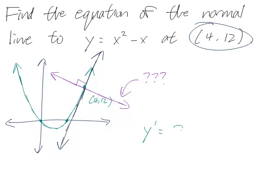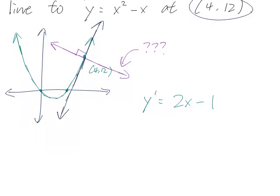And the derivative here is 2x minus 1, since the function is x squared minus x. And then, let's see, x is 4.